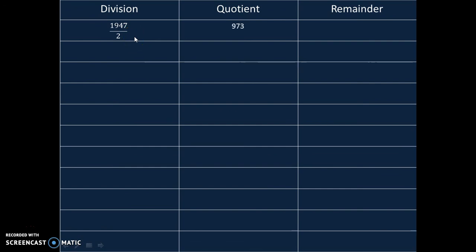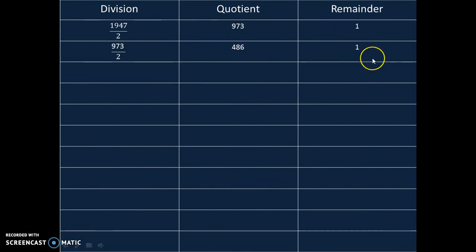1947 divided by 2 gives 973 with remainder 1. 973 divided by 2 gives 486 with remainder 1. We will continue this process till the quotient equals 0. 486 divided by 2 is 243 with remainder 1. 243 divided by 2 is 121 with remainder 1. 121 divided by 2 is quotient 60 with remainder 1.